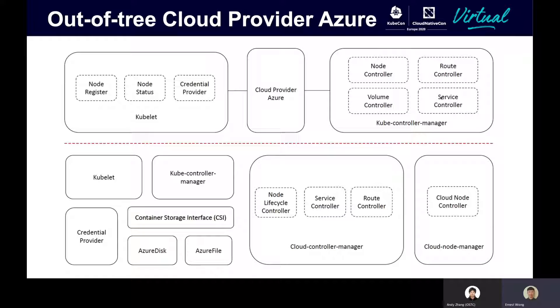The cloud controller manager contains all the cloud-specific logics for Kubernetes operations and consists of three major controllers: the node lifecycle controller, which reconciles individual nodes on your Kubernetes clusters; the service controller, which reconciles the service resource for Kubernetes and also helps reconcile load balancer resources on Azure; and the route controller, which reconciles routes on Azure. The cloud node manager is a daemon set deployed to your Kubernetes clusters that initializes new nodes by applying appropriate taints before becoming available for other pods to schedule to, and also helps reconcile node IP and node labels.